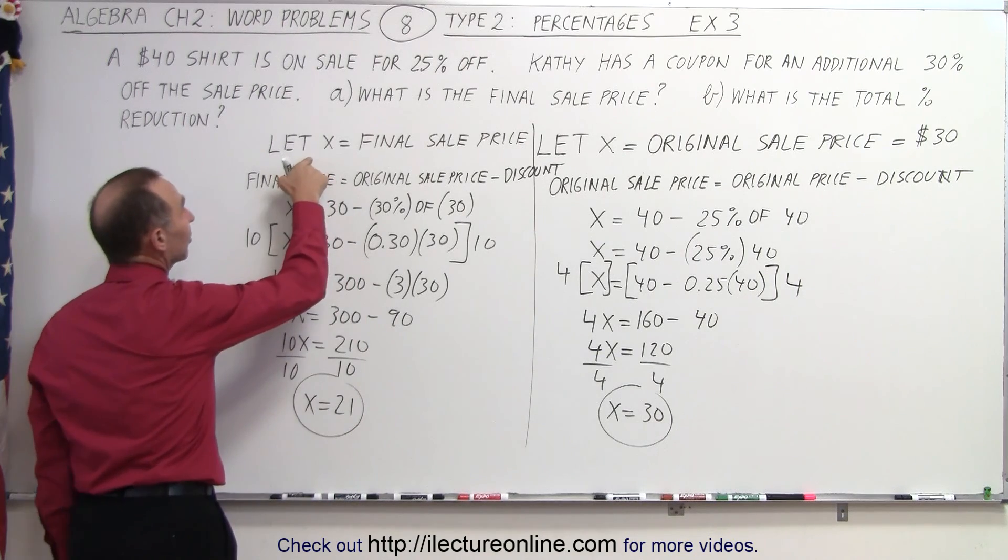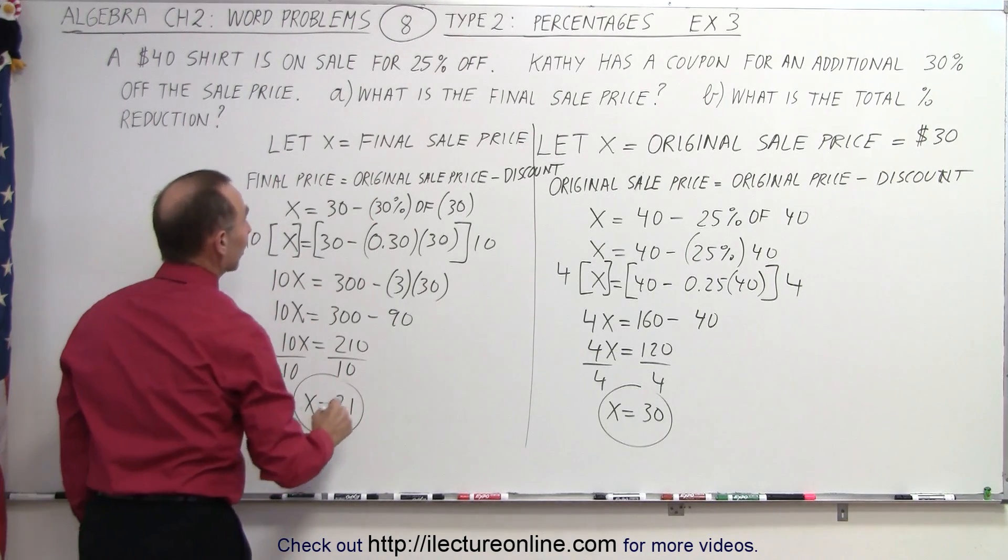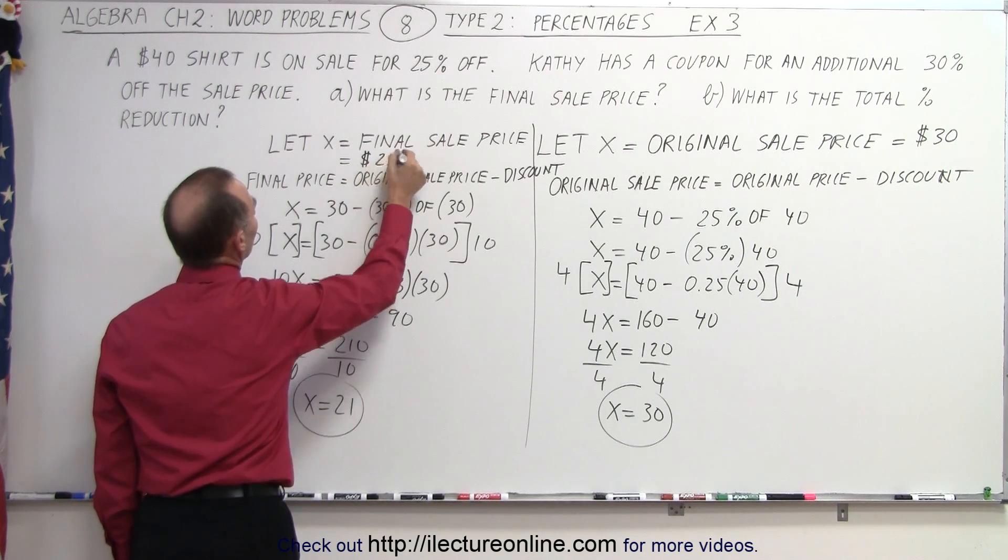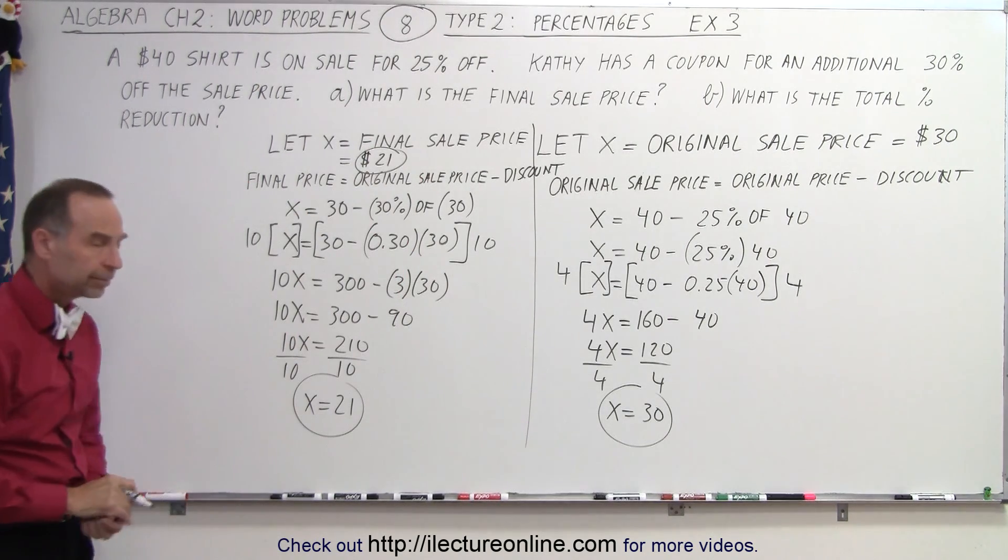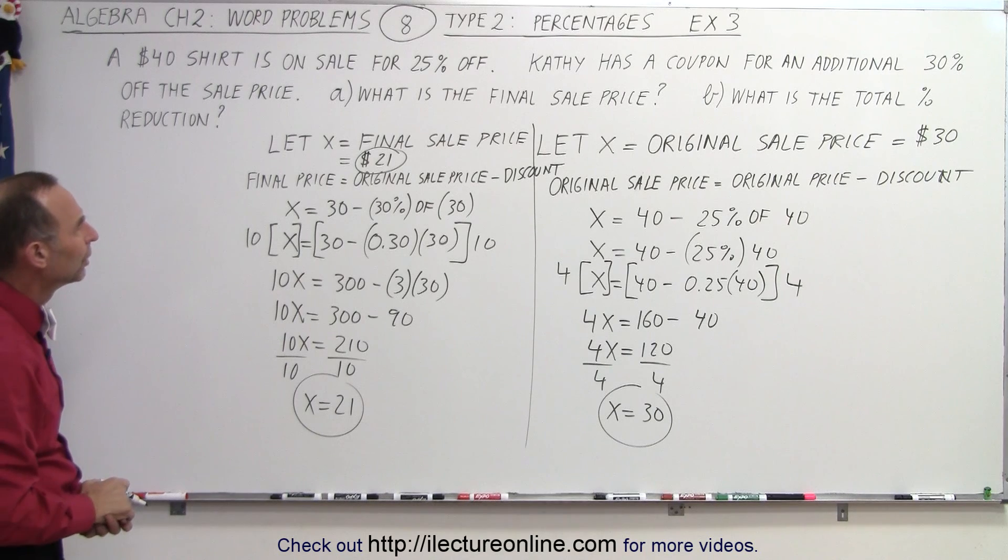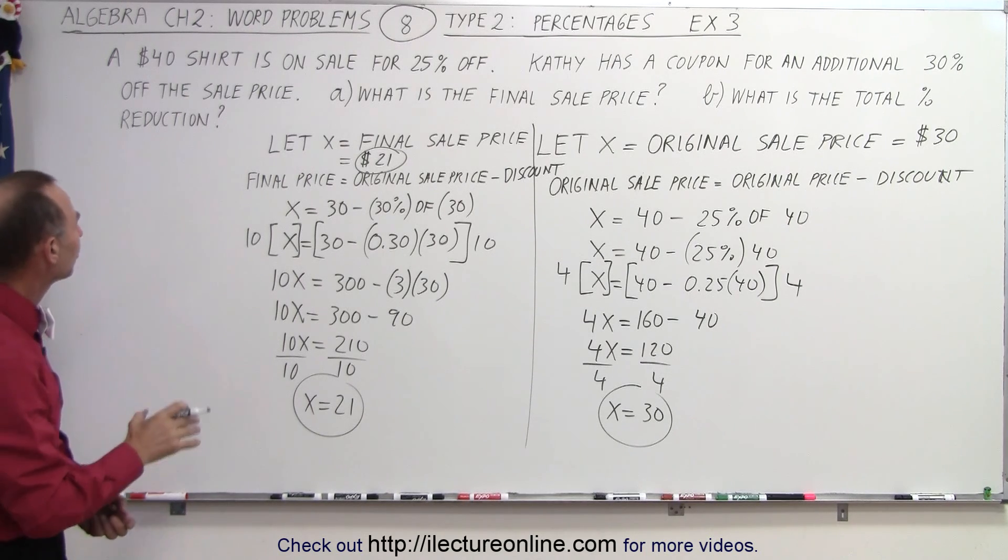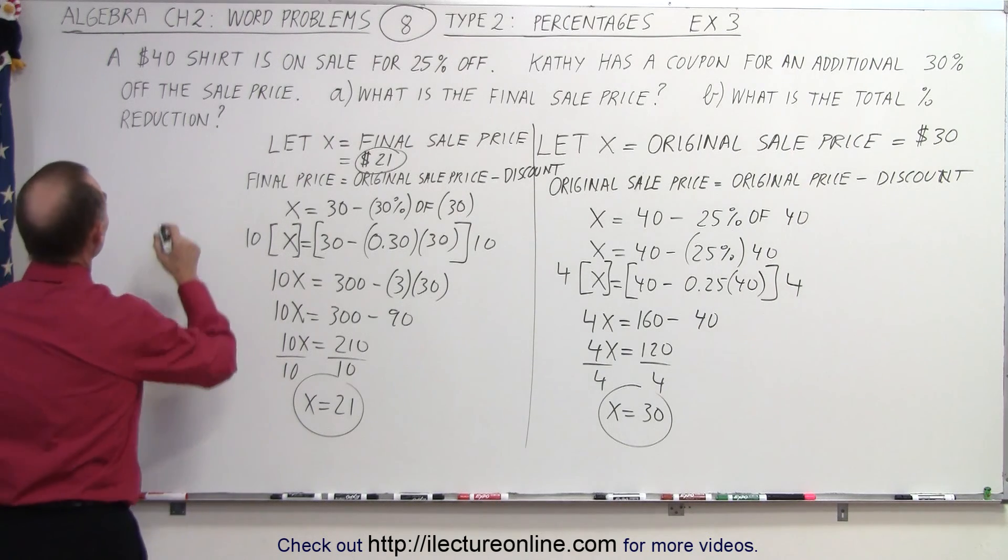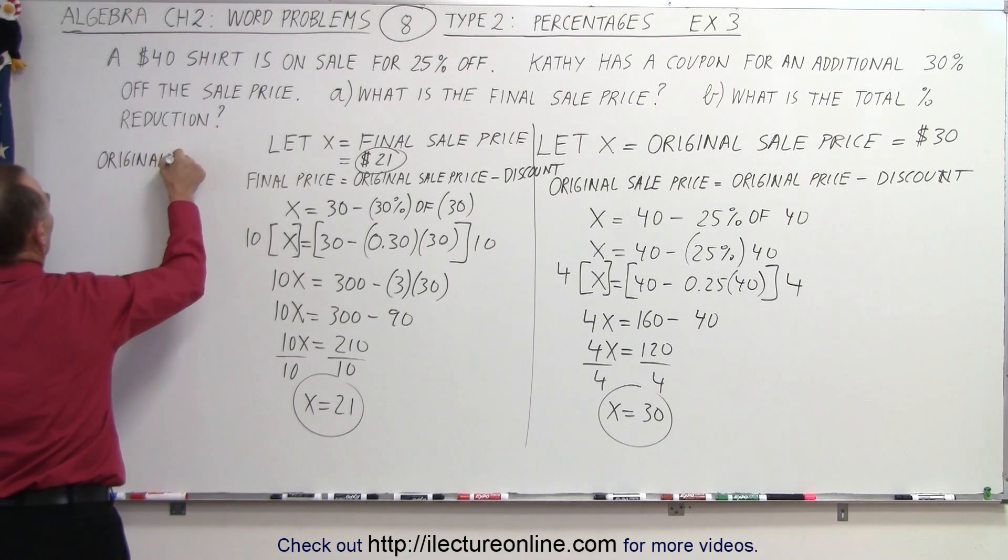Now since we had defined x here as the final sale price, therefore the final sale price is equal to $21. Now we want to know the total percent reduction in the original price. So we know that the original price was equal to $40.